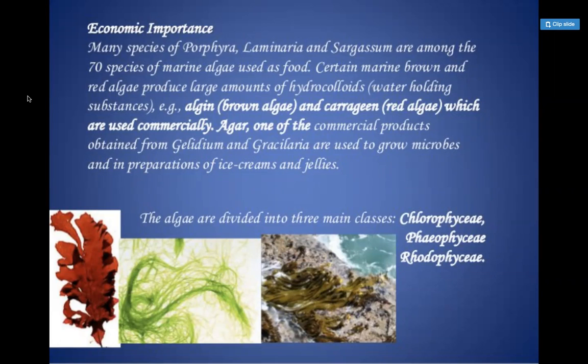Some algae are a good source of food — examples include Porphyra, Laminaria, and Sargassum, which are rich in nutrients and consumed as food. Other algae have high water-holding capacity; these hydrocolloids are used to transport things. The example for brown algae is alginate, and for red algae it is carrageenan — you can remember this because carrageenan carries 'R' for red.